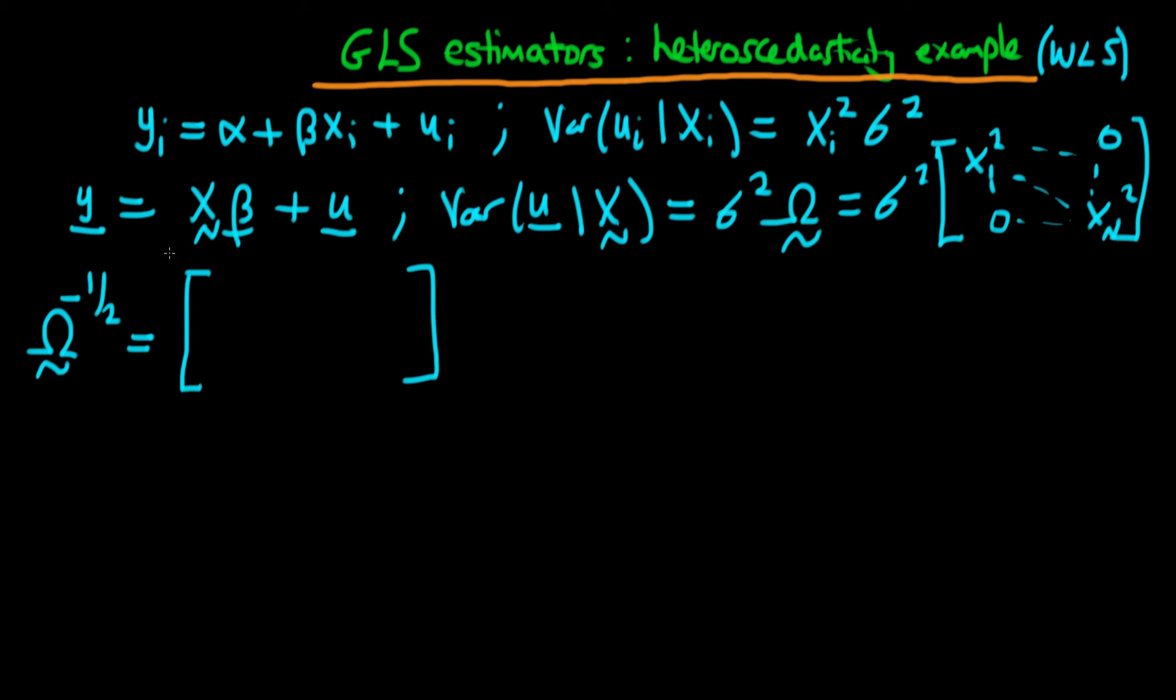So omega to the power minus a half is really just each of these individual components to the power minus a half. So essentially the first component is 1 over x1, second component is 1 over x2, all the way through to 1 over xn, and all the off-diagonal components are equal to 0. So our transformation matrix in this particular example takes on a particularly simple form.